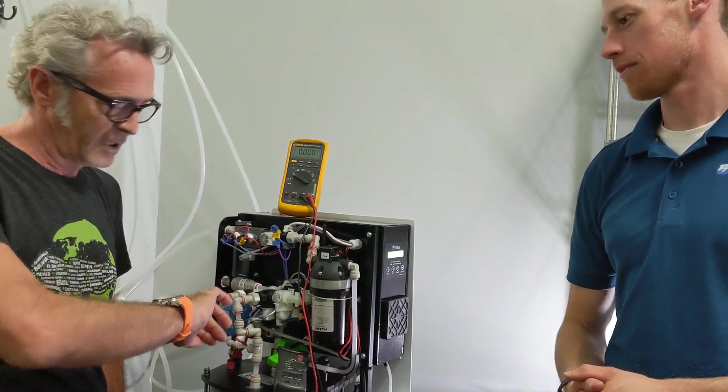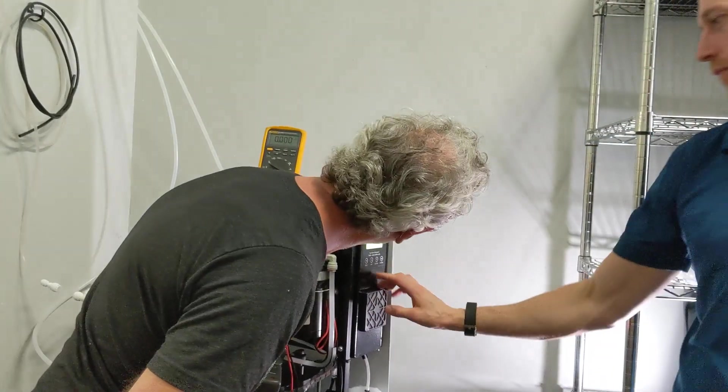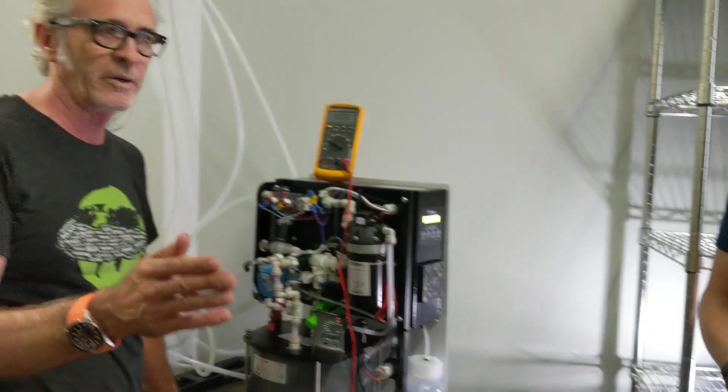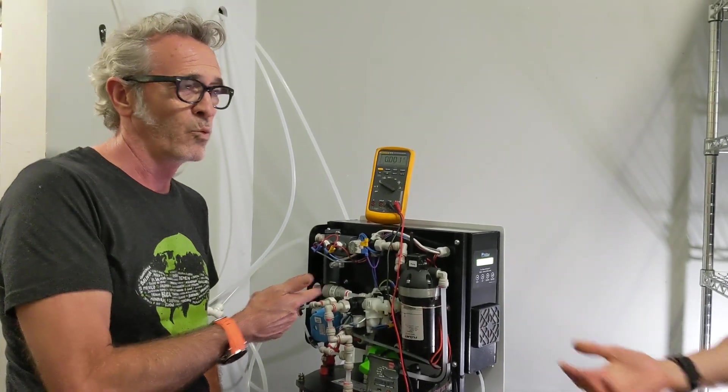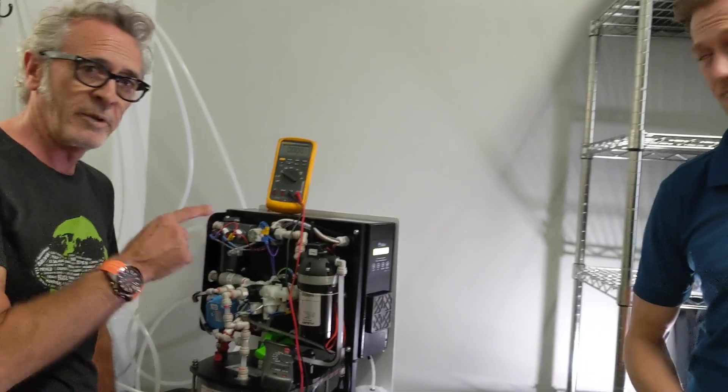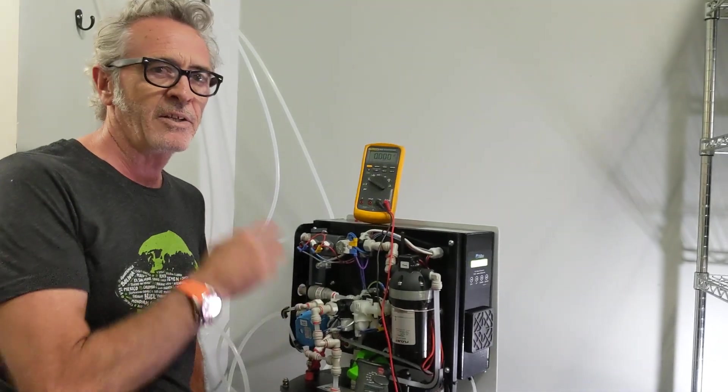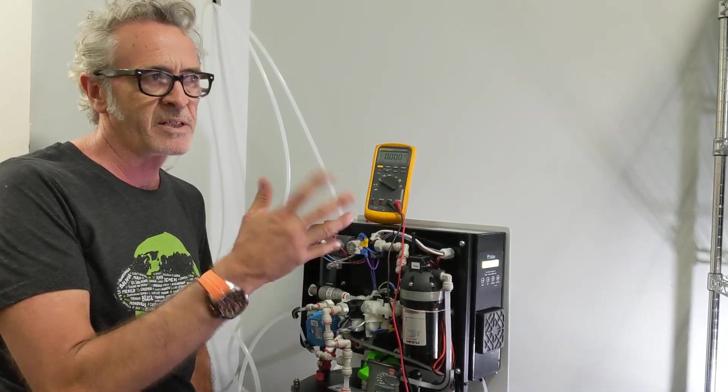So the machine, literally in about five minutes, rectified the water and is now giving us perfect recipe quality water, what we scaled it for. So we have lab condition SCA certified water in five to seven minutes.